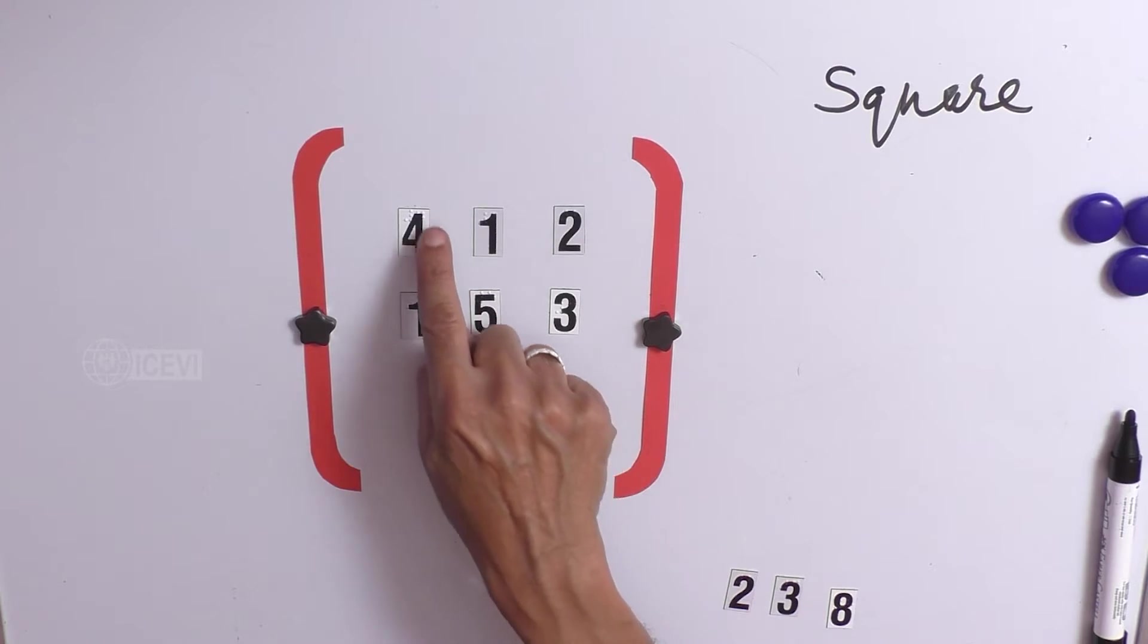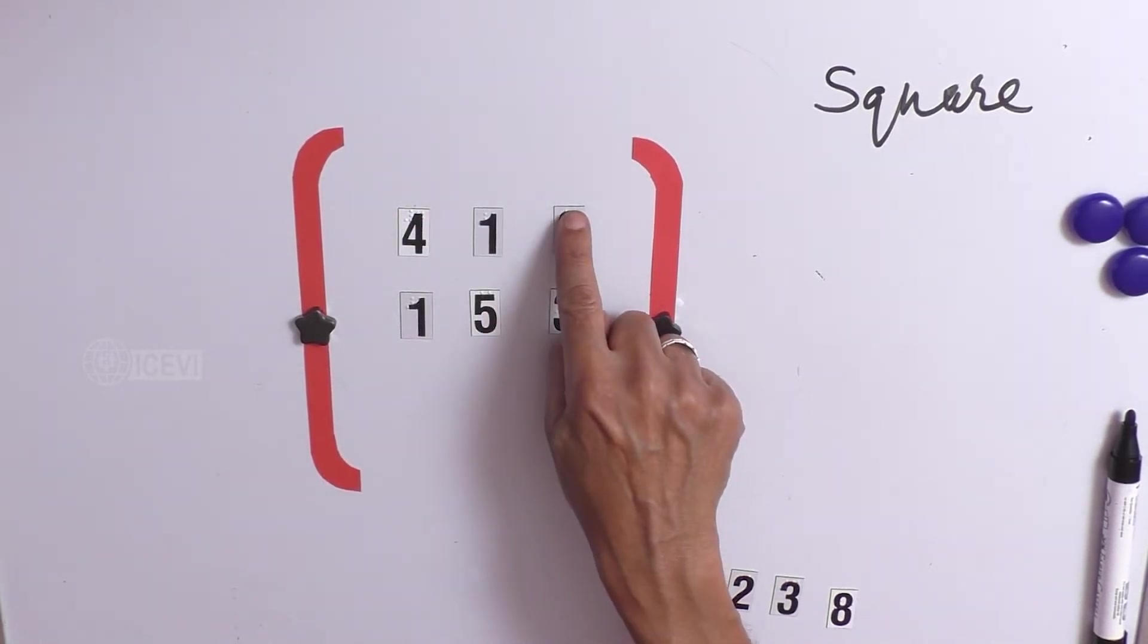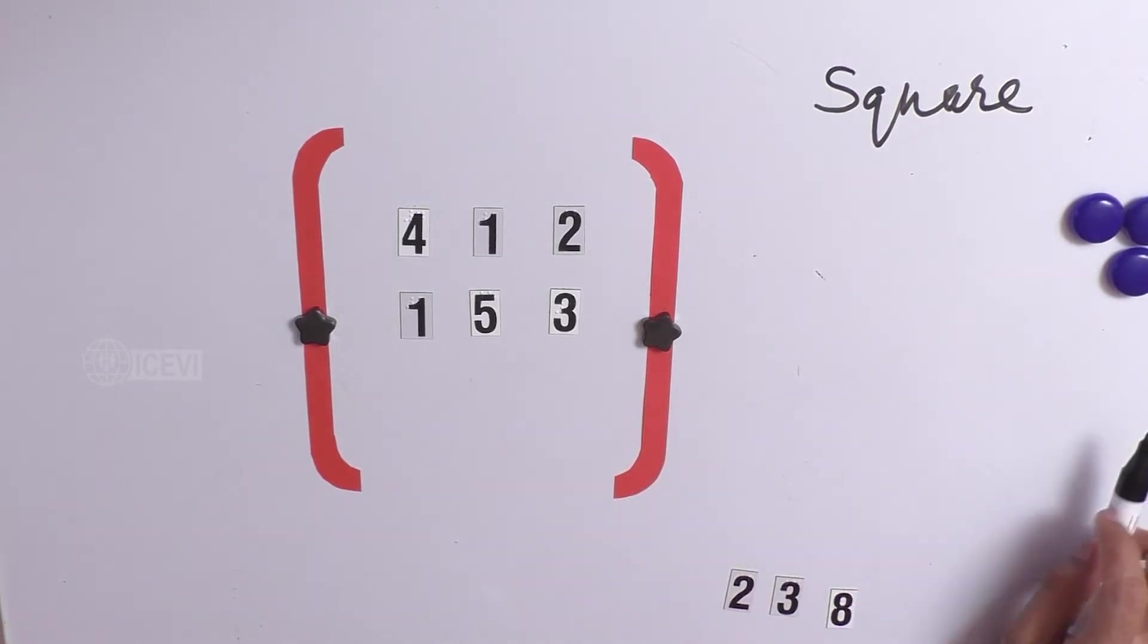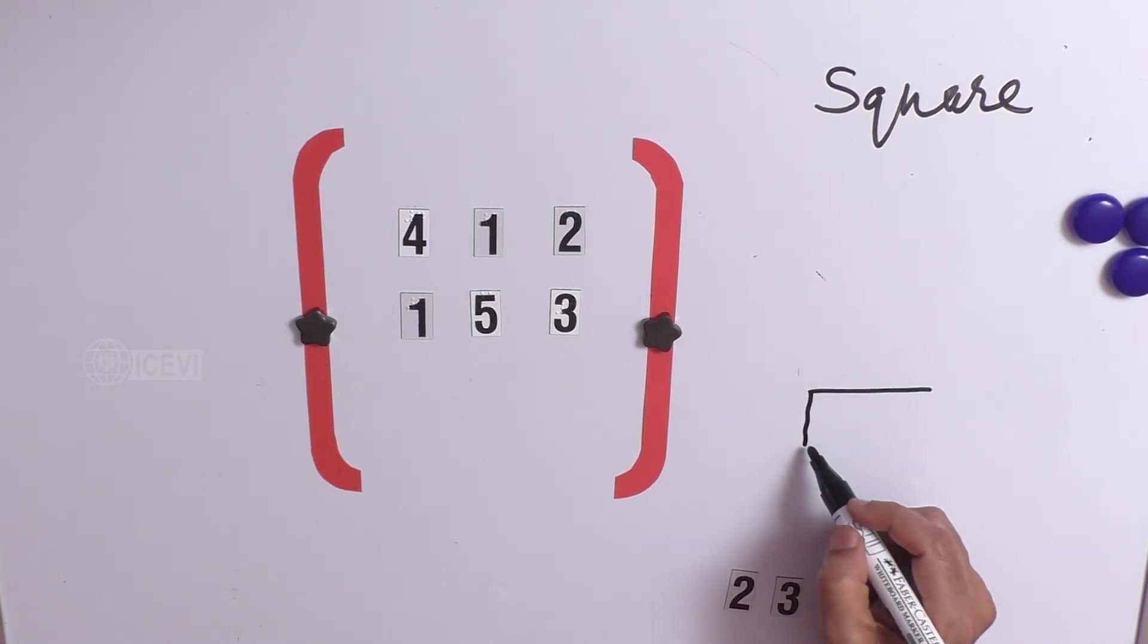When you arrange that in terms of columns, there are 3 columns. The first column has 4 and 1, second column has 1 and 5, and the third column has 2 and 3. So, what happens here, it resembles the shape of a rectangle.